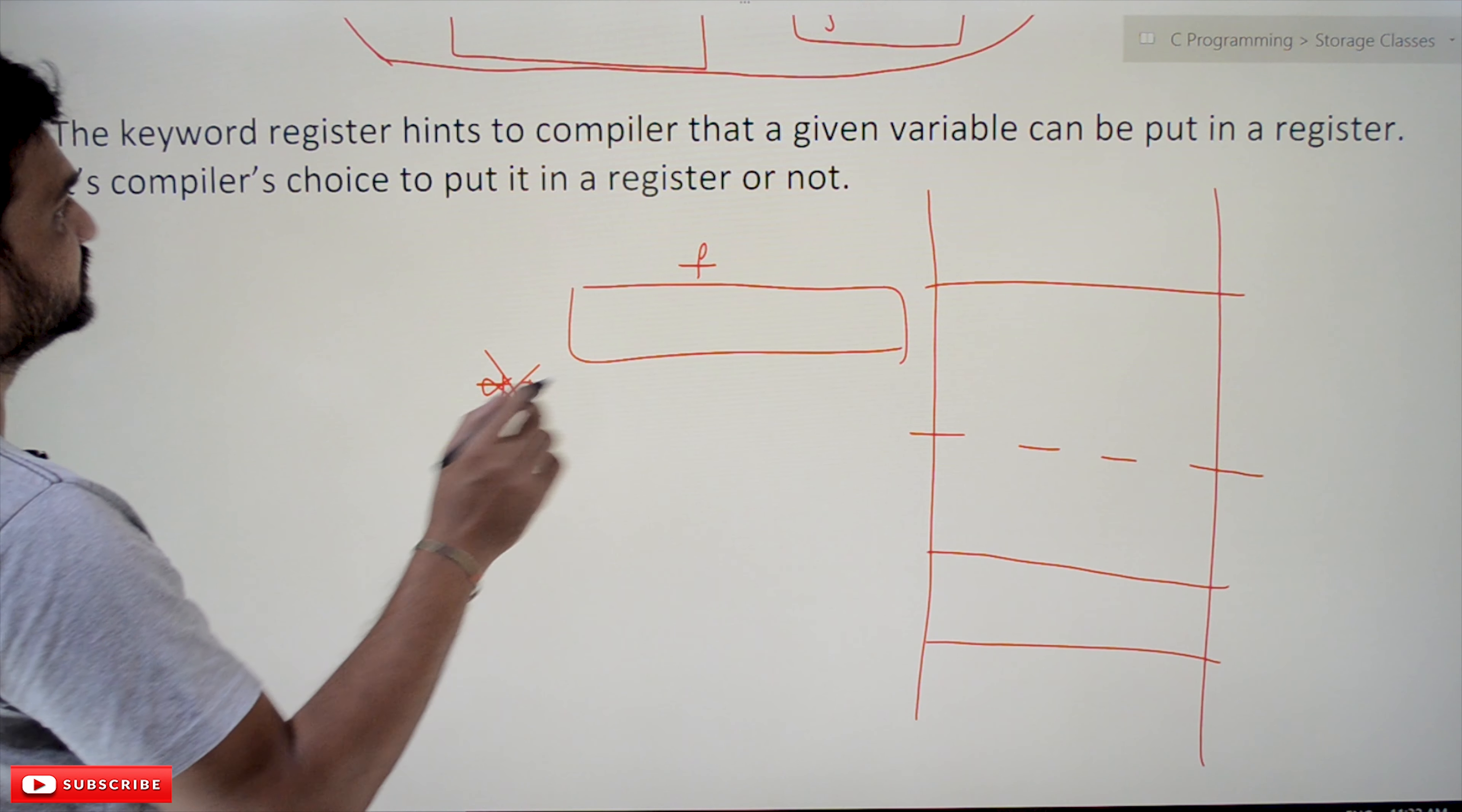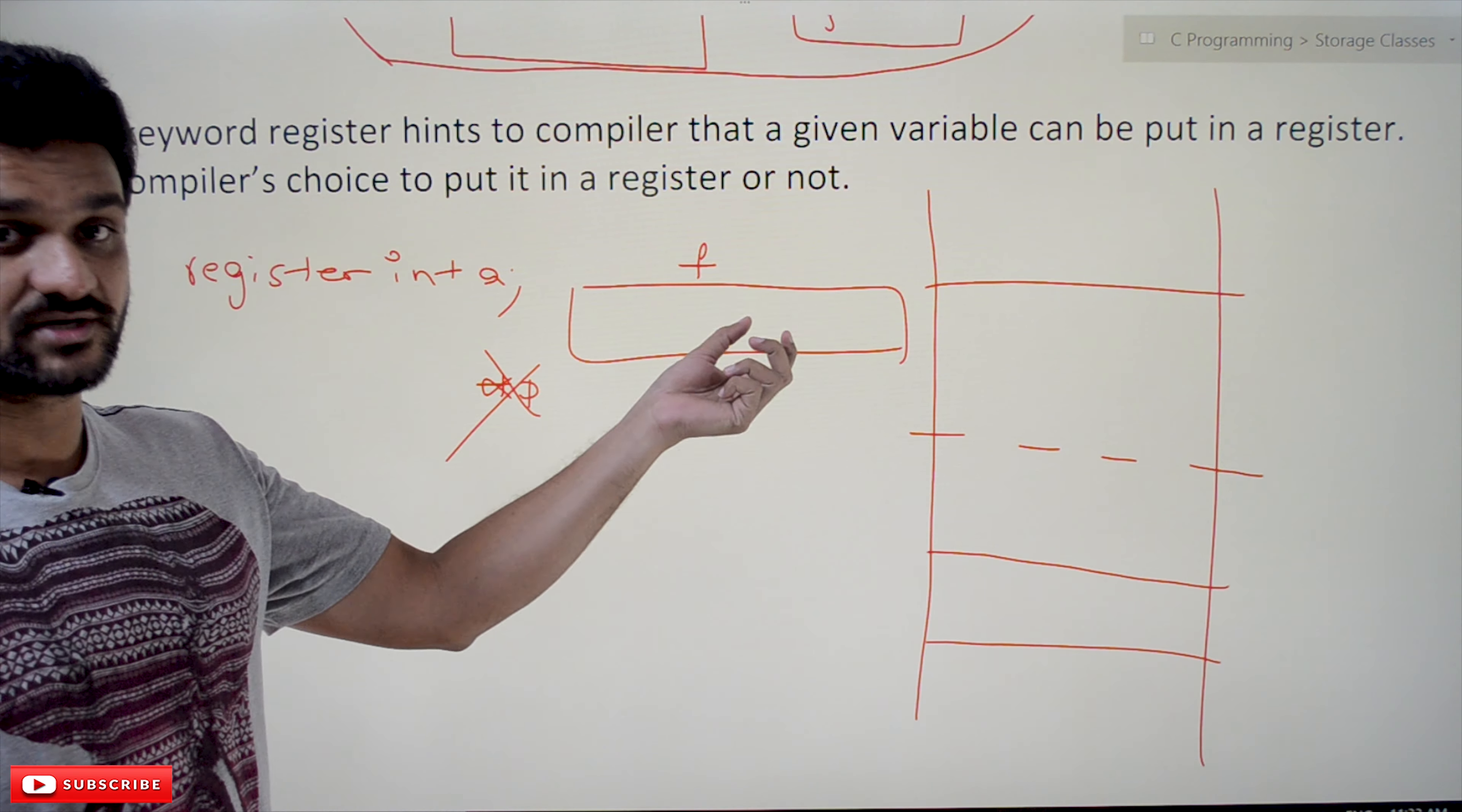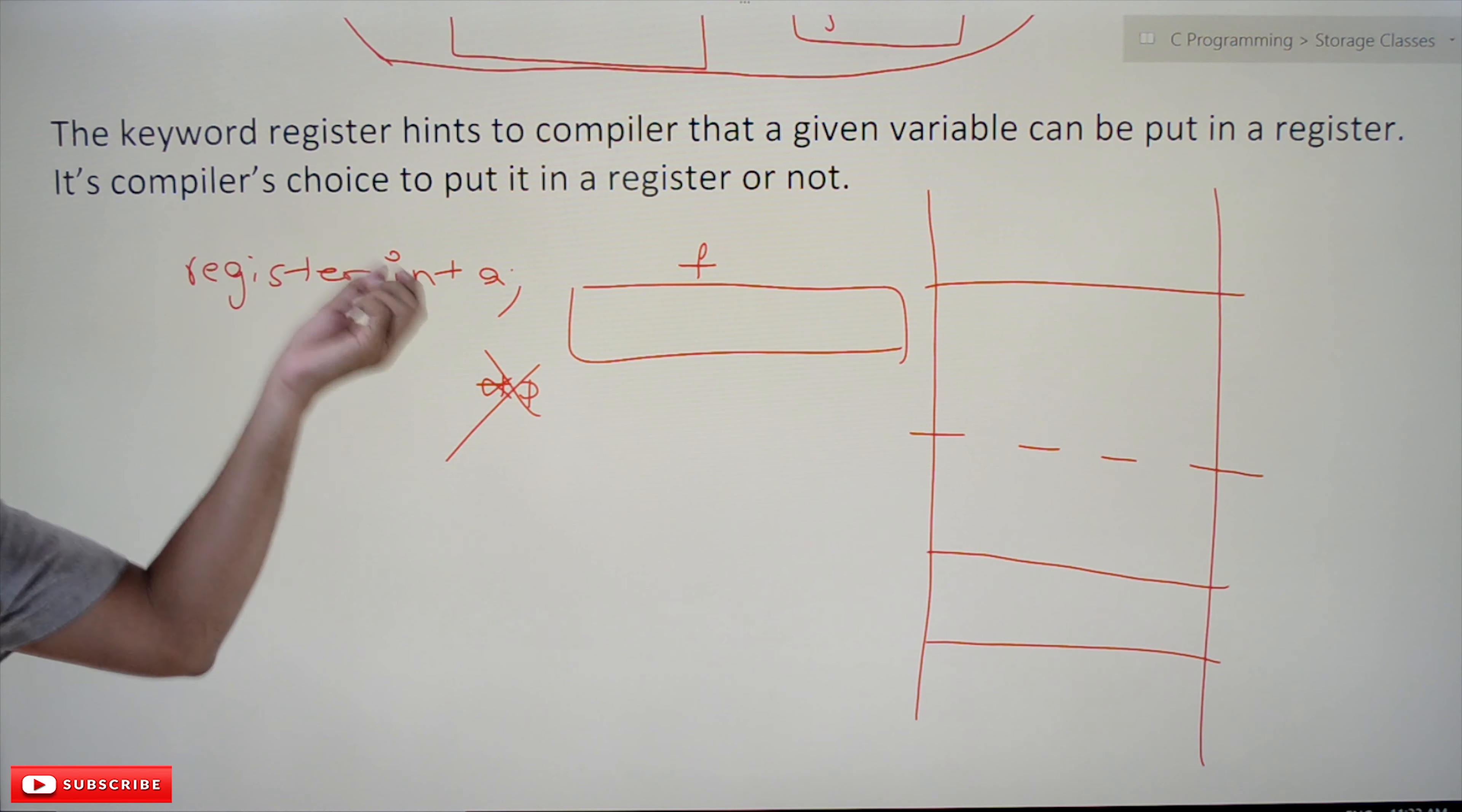The concept is whenever we use register int a, what we are declaring to the compiler is we want to store this integer a on register, not on RAM, because this value is frequently used by the program. As this device is faster, it becomes easier for the program. The program will run efficiently if this variable is getting stored on the register. Based upon that we can use this keyword for variables to be stored in registers.